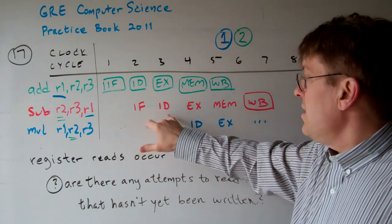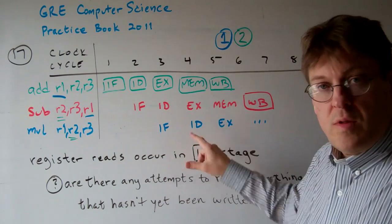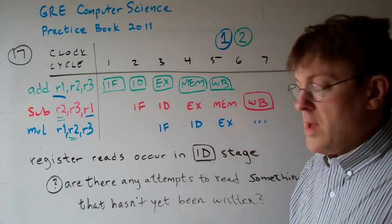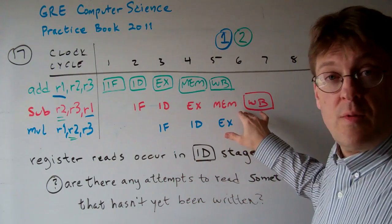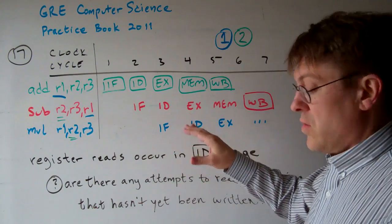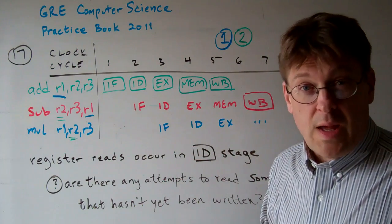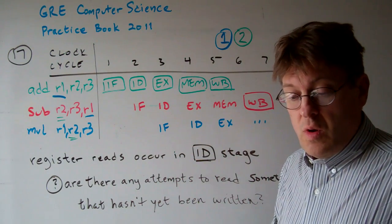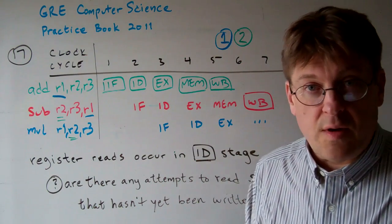However, as far as the ID stage is concerned, the only thing the ID stage has to worry about is, has everything been written before I tried to read it? So, the answer to question 17 is B, there are two data hazards to detect.